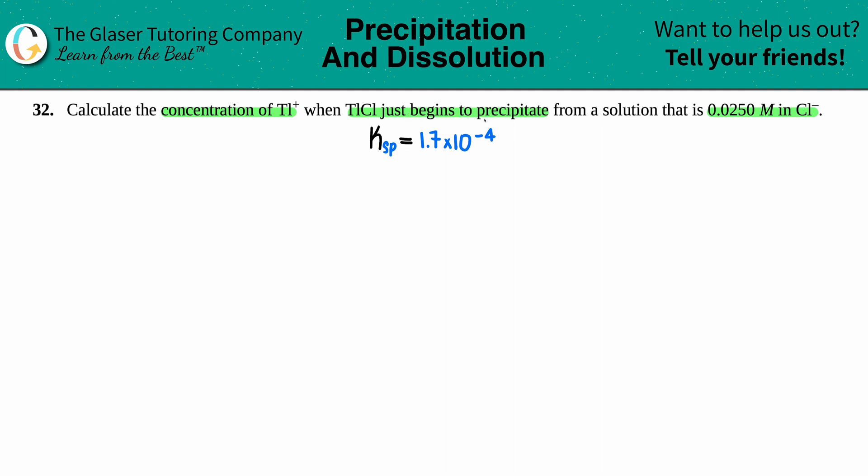start to form a solid. We're basically at a saturated solution when you begin to precipitate. When you begin to precipitate, you're at the start of a saturated solution, and if you add more concentration, you'll turn into a supersaturated solution in which you'll have a lot of precipitate.